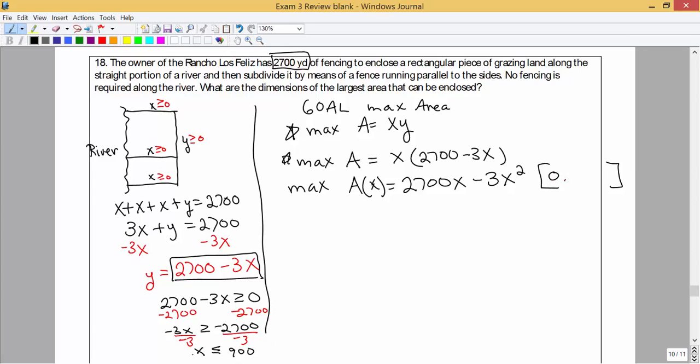So the lower bounds for x: x has to be at least 0 and can go all the way up to 900. Any more than that and the y value will be negative. So these are the limitations for what x can be in order to maximize our area.